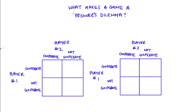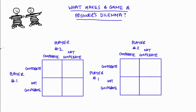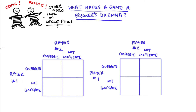In this video I'm going to be talking about what makes a game in game theory a prisoner's dilemma. In a previous video I talked about the classic story of the two prisoners involved in some crime and the police offered them a deal. That story is a typical way of describing the prisoner's dilemma, and I recommend that video as an introduction to the game. The prisoner's dilemma is often applied to lots of different situations.